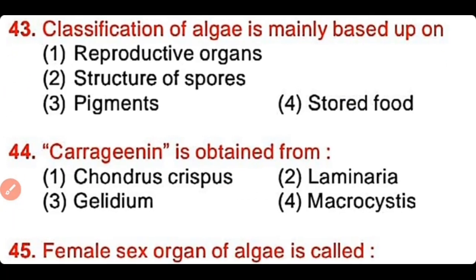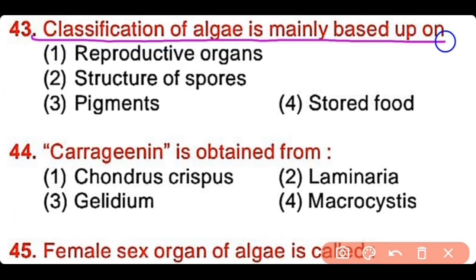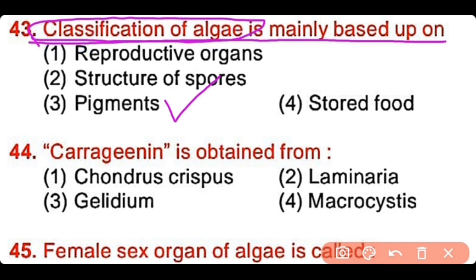Question number 43: Classification of algae is mainly based on reproductive organs, structure of spores, pigments, or stored foods? The correct answer is option 3. Classification of algae is mainly based upon the types of pigments present in them.